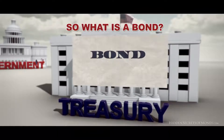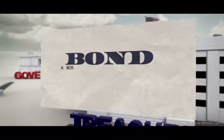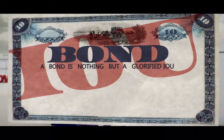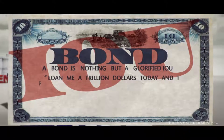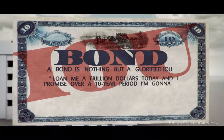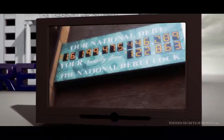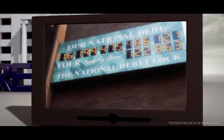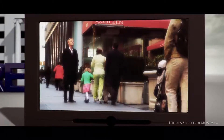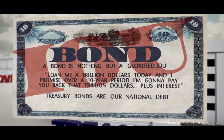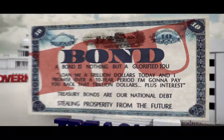So what's a bond? A bond is really nothing but a glorified IOU. It's a pretty piece of paper with numbers printed on it that says: loan me a trillion dollars today and I promise over a ten-year period I'm going to pay you back that trillion dollars plus interest. What you need to understand is that Treasury bonds are our national debt. These glorified IOUs are to be paid back by you and I and our descendants through future taxation. Therefore, when the government issues a bond, it steals prosperity out of the future so that it can spend it today.